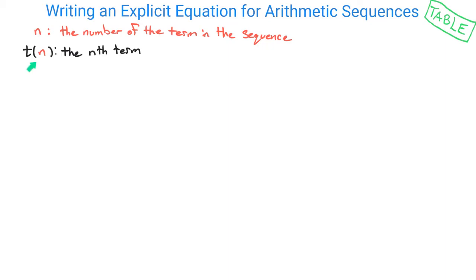So t(n) represents the n-th term itself, the actual value. So what is that number that you actually get out? And so for an arithmetic sequence, what is happening is that you're always going to be adding or subtracting.